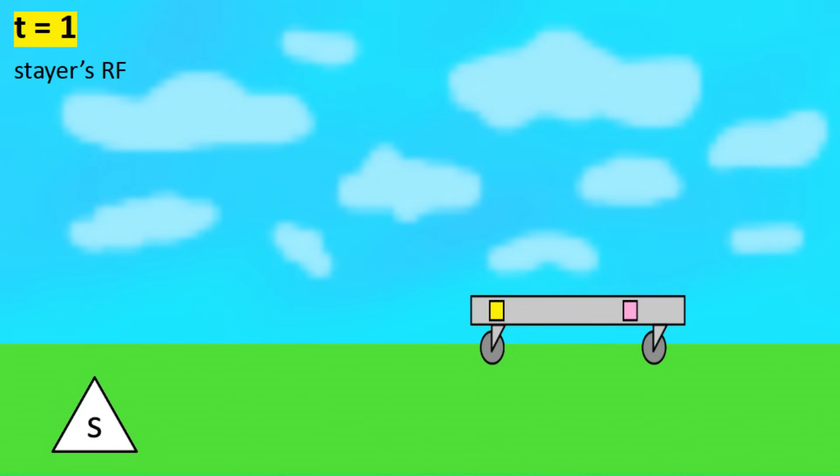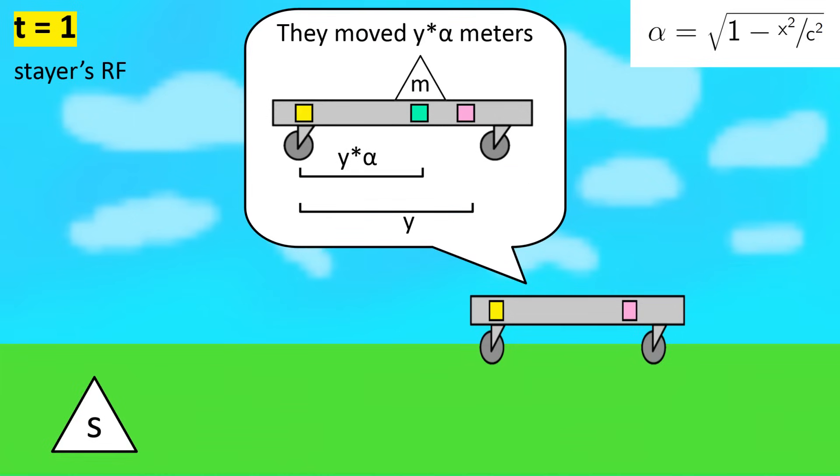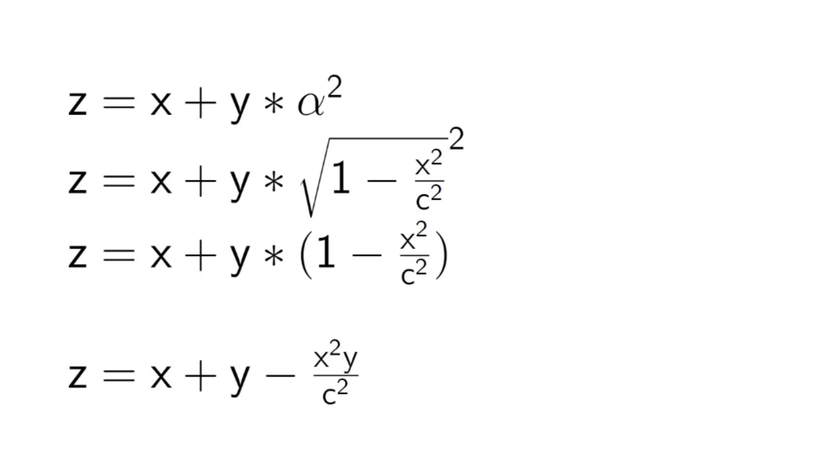In one second in the stairs reference frame, the platform will only age by alpha seconds. After alpha seconds in the platform's reference frame, the mover will have moved y times alpha meters, rather than the full y meters from before. This distance is measured along the length of the platform, so in the stairs reference frame, it's contracted by the same factor alpha, becoming y times alpha squared meters. So it seems like after one second in the stairs reference frame, the mover is y times alpha squared meters past a point x meters past their starting location. This will give us a velocity of z equals x plus y minus x squared y over c squared.